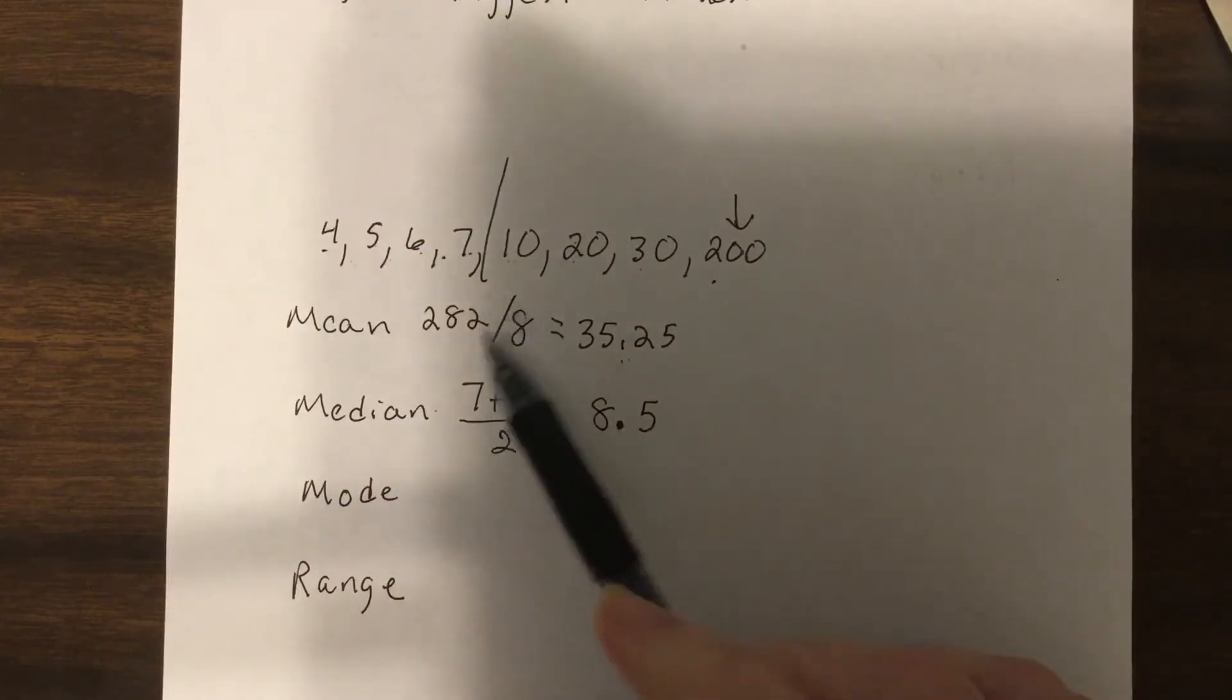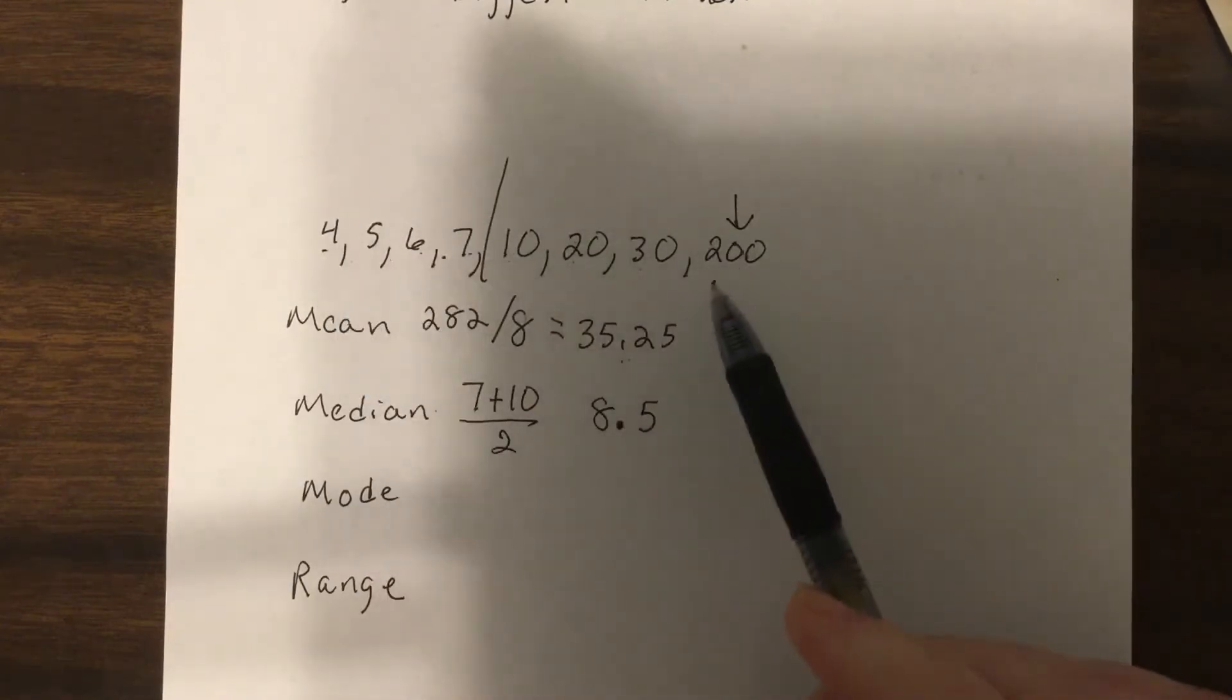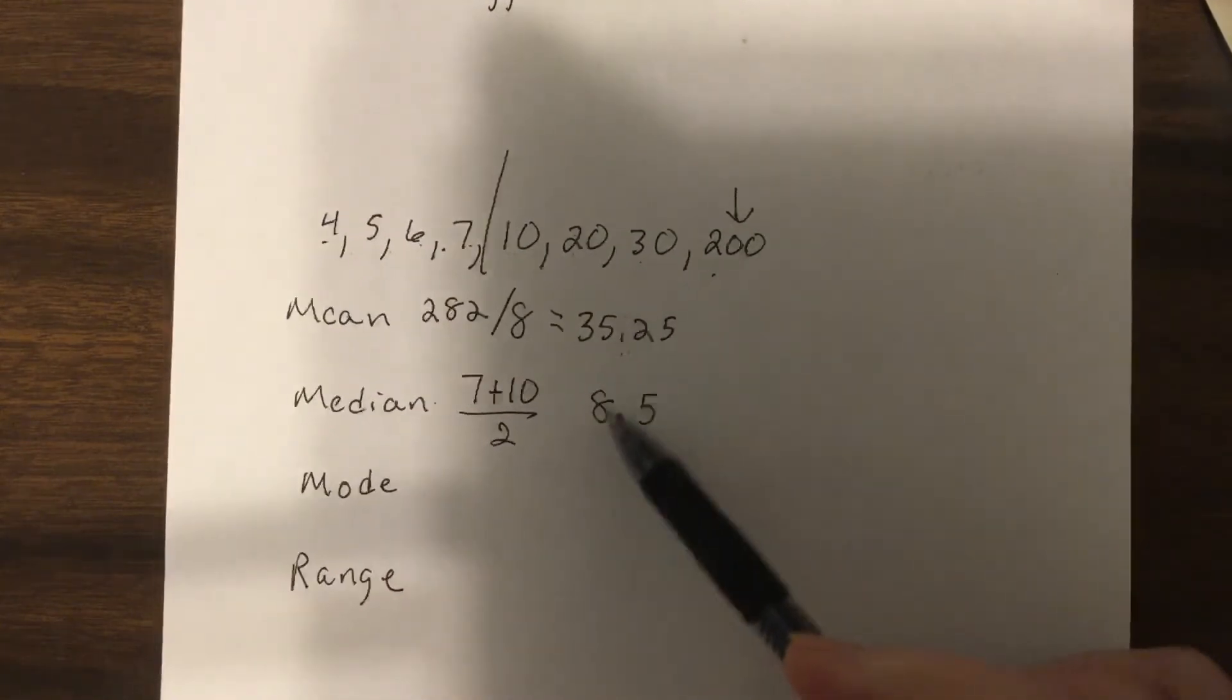So notice the huge difference. The more the data is evenly distributed, the closer these numbers are to being together.